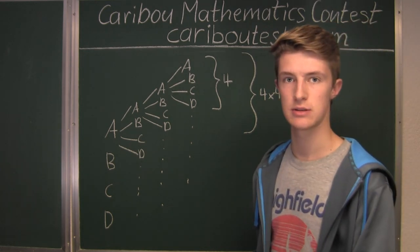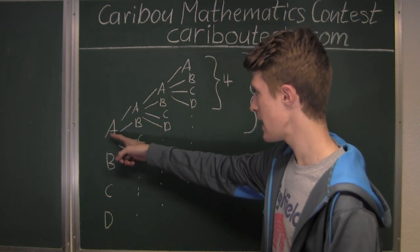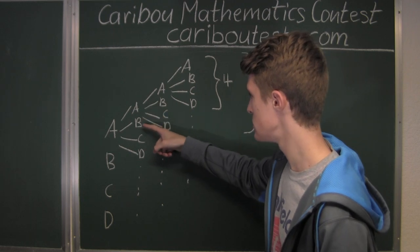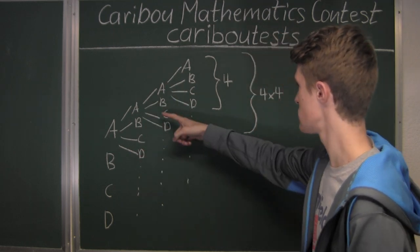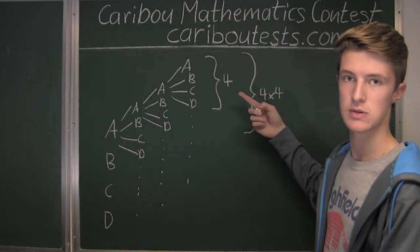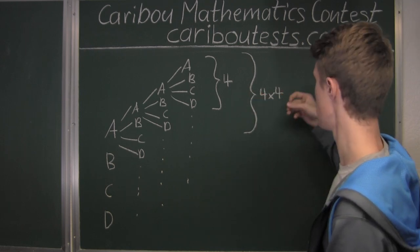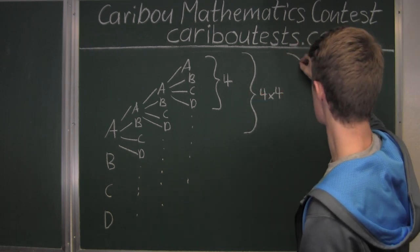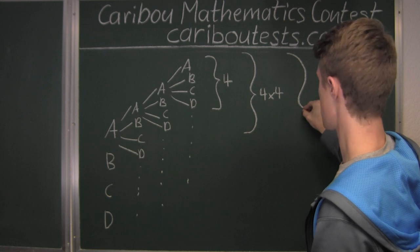Now, for all combinations of words that start with only the letter A, that would be one, two, three, four times this number here, which is four times four times four.